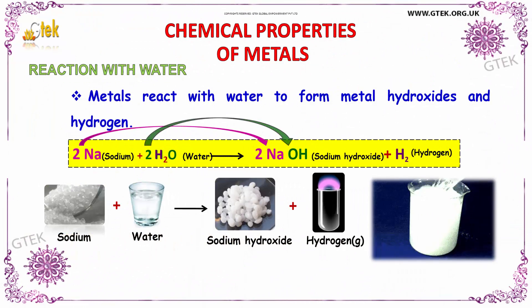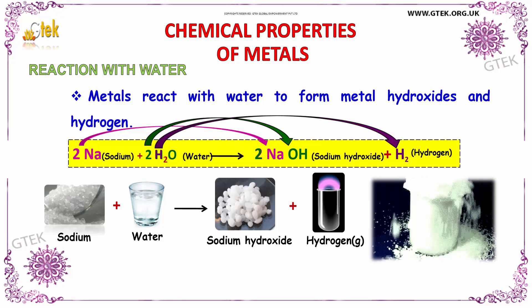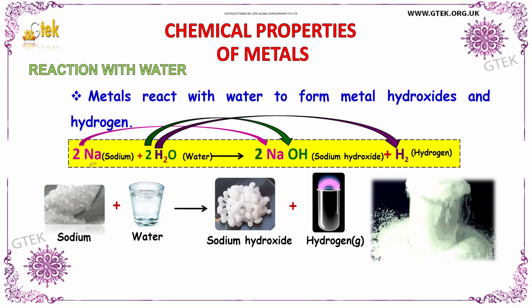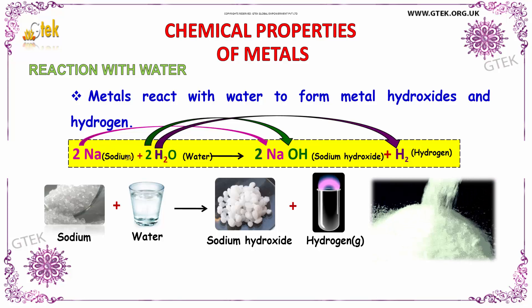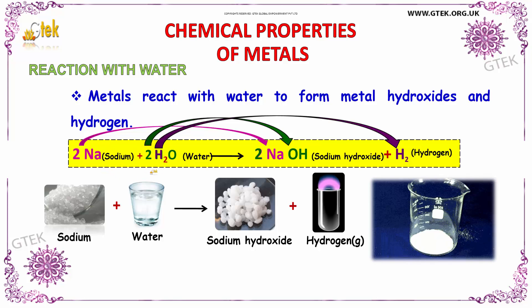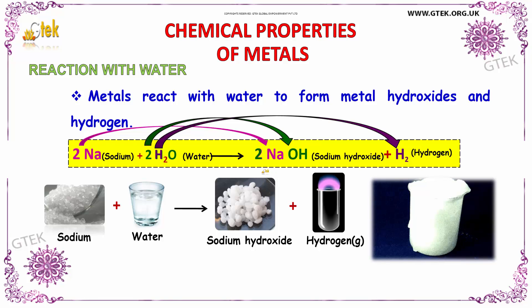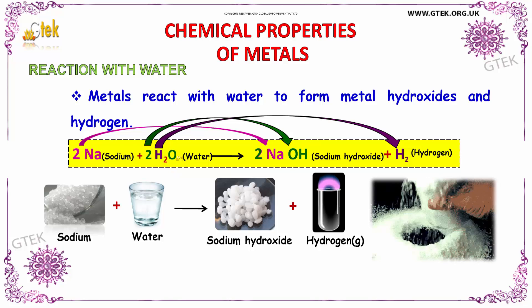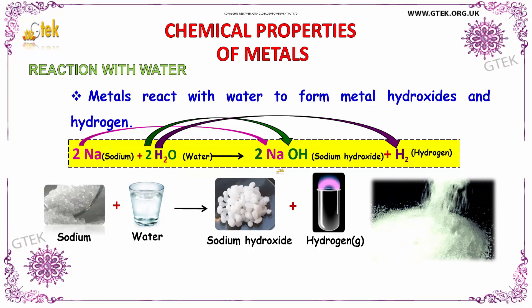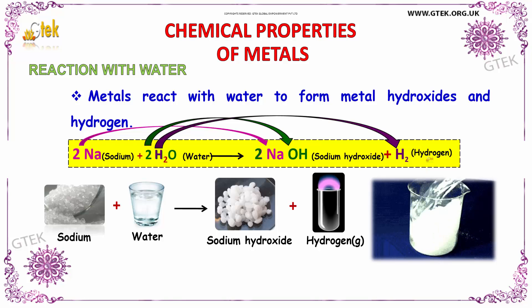Now let us see the chemical property of a metal on reaction with water. Here we have taken sodium as a metal. Metal in reaction with water forms some metal hydroxide and hydrogen. You can see here, sodium on reaction with water gives sodium hydroxide — that is a metal hydroxide — plus hydrogen gas.